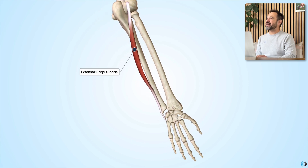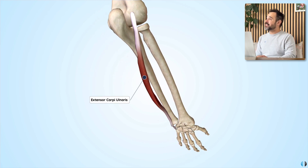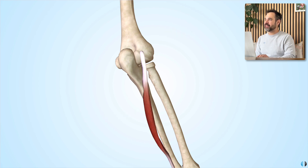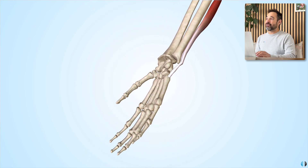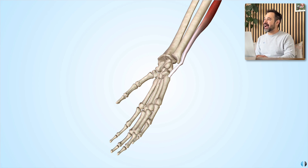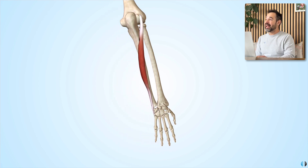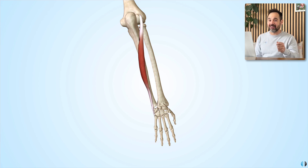Then we have extensor carpi ulnaris. This muscle also originates from the lateral epicondyle of the humerus, but also has an attachment to the posterior border of the ulna. It then runs down the posterior aspect of the ulna and inserts into the base of the fifth metacarpal, attaching a little bit more medially. The key action of this muscle is wrist extension, but also ulnar deviation.